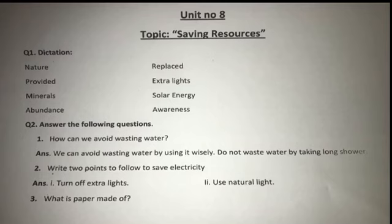Extra lights jinki hume zaroorat nahi hoti — for example, agar hum ek room mein baithe hain aur us room mein 10 lights lagi hui hain, toh zaroori nahi ki hum das hi lights on karke baithe rahein. Agar hamaari ek light se zaroorat puri ho rahi hai, toh hum ek hi light use karenge aur baaki extra lights off kar denge. Is tarah hum electricity save kar sakte hain.